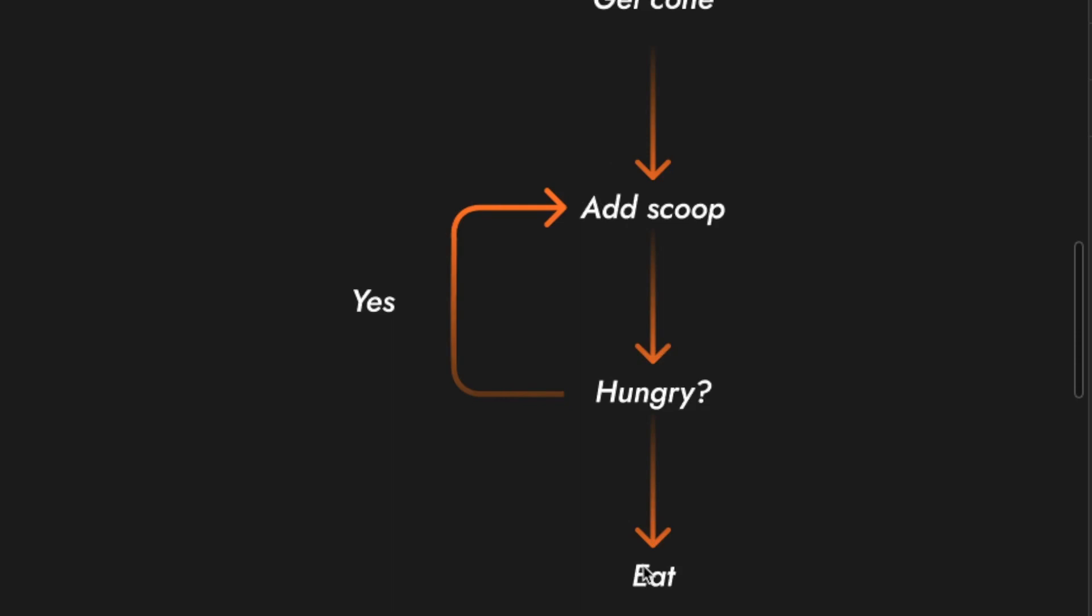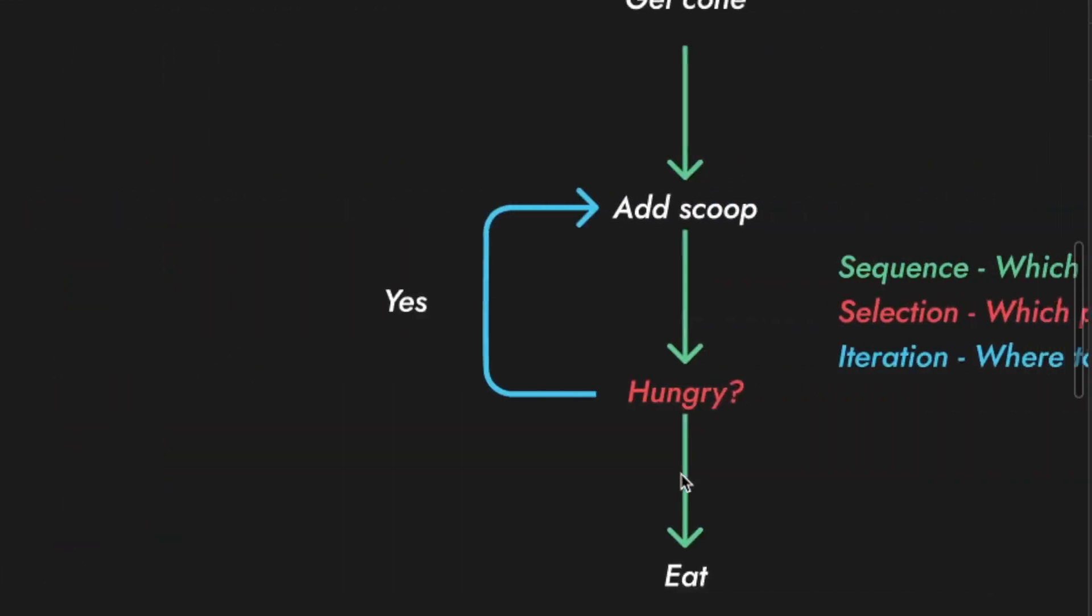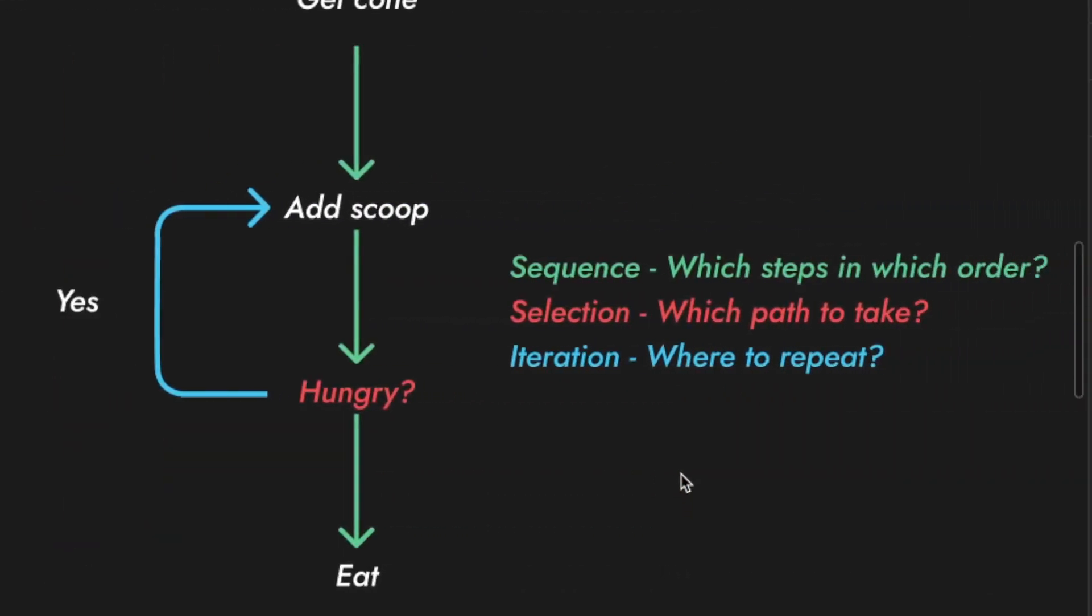So that's the algorithm for making an ice cream, and any algorithm fundamentally breaks down into three things. They break down into sequence, selection, and iteration.